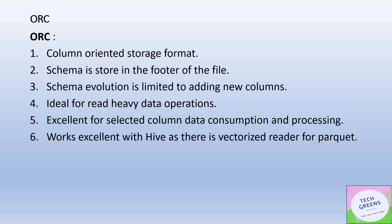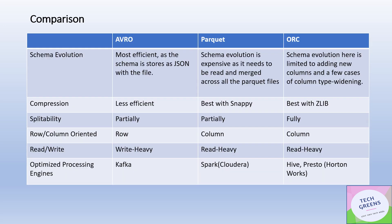Now let's look at the comparison. The first parameter is schema evolution. Avro has excellent schema evolution because the schema is stored in JSON format within the file, so any addition or deletion of columns can be updated quickly. Parquet's schema evolution is a little expensive as it needs to merge different files. For ORC, schema evolution is limited to adding new columns or in some cases changing data types to bigger types, such as from int to bigint.